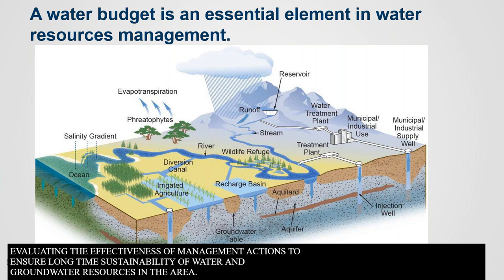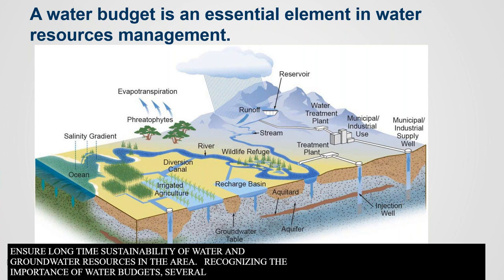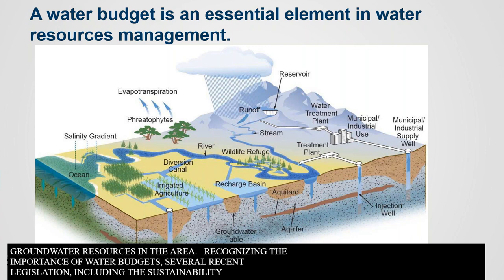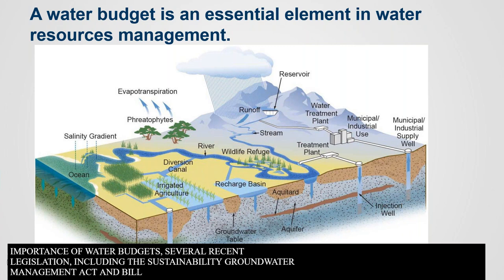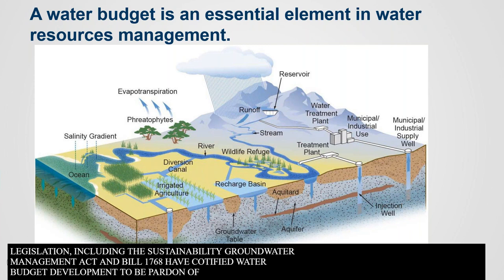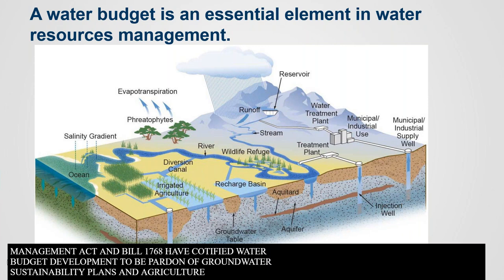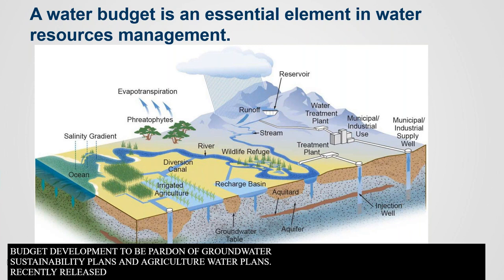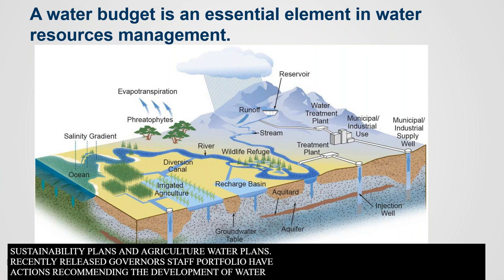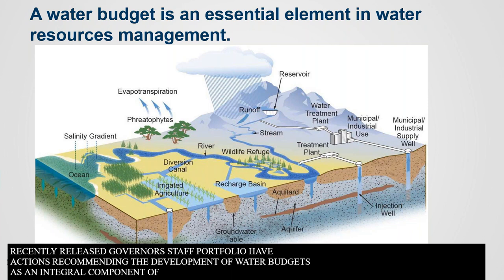Recognizing the importance of water budgets, several recent pieces of legislation, including the Sustainable Groundwater Management Act and Assembly Bill 1668, have codified water budget development as part of groundwater sustainability plans and agricultural water management plans. The recently released Governor's draft water resilience portfolio has actions recommending the development of water budgets as an integral component of planning to advance water resilience in California.